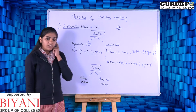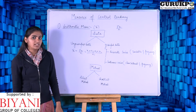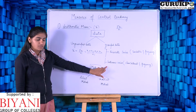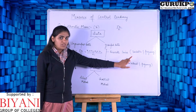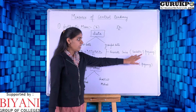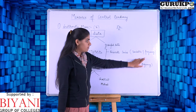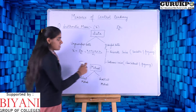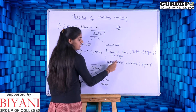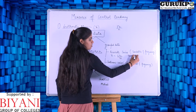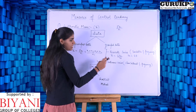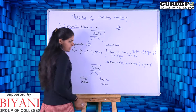For grouped data, it can be divided into two types: discrete series and continuous series. In discrete series, a variable and a frequency are given. The formula is x-bar equals sigma fx upon capital N, where capital N equals the summation of frequency, and sigma fx equals the summation of the multiplication of frequency and the variable.